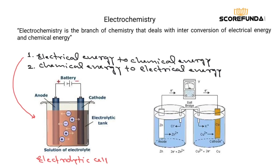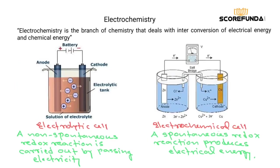The conversion of chemical energy into electrical energy is carried out in a cell called an electrochemical cell. This involves a spontaneous redox reaction where chemical energy is converted into electrical energy. So these two conversions take place in two different cells.